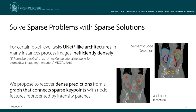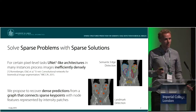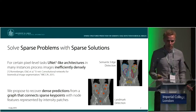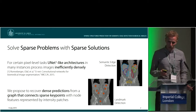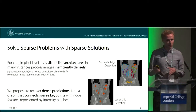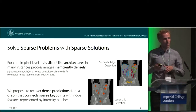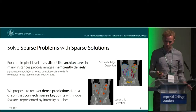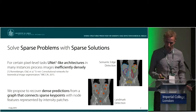these architectures process images sometimes inefficiently densely. In this work we investigated an alternative approach where we recover dense predictions directly from a graph of image patches, which I will show you in the next slides.